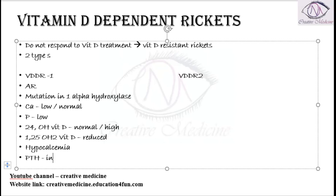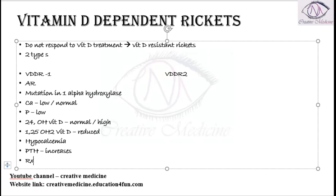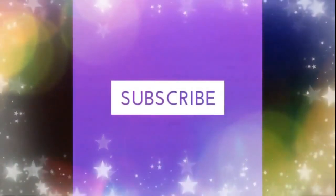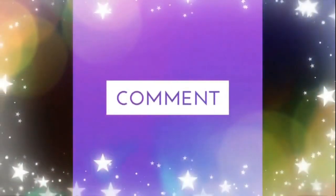Parathyroid hormone levels are therefore high. Treatment of Vitamin D Dependent Rickets Type 1 is calcitriol, 0.5 to 2 micrograms per day. Thank you for watching.